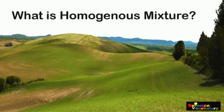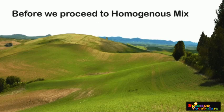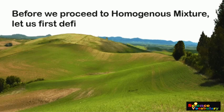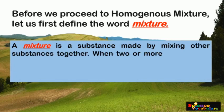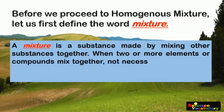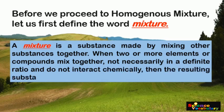What is Homogeneous Mixture? Before we proceed to homogeneous mixture, let us first define the word mixture. A mixture is a substance made by mixing other substances together. When two or more elements or compounds mix together, not necessarily in a definite ratio, and do not react chemically, then the resulting substance is known as a mixture.